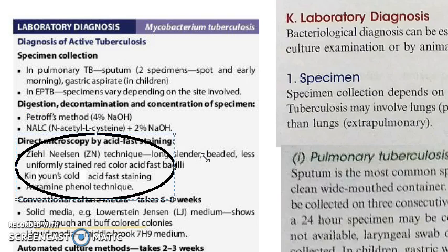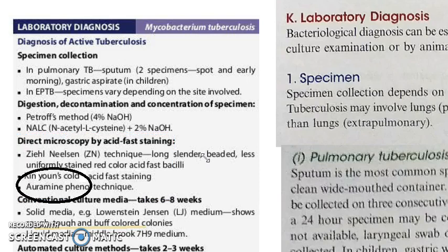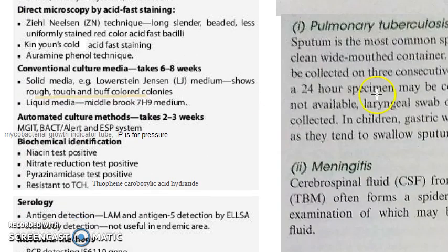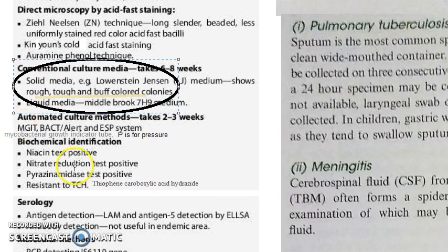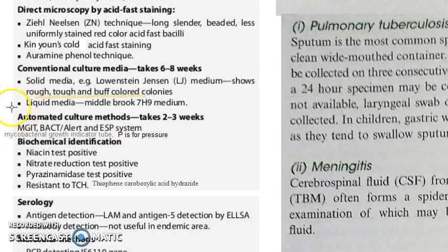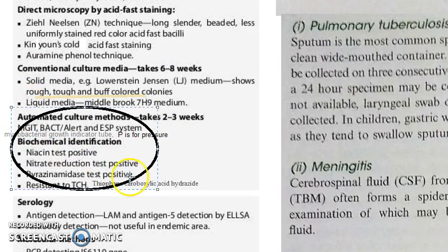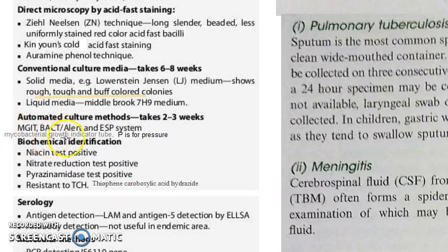Then you have direct microscopy using the Ziehl-Neelsen technique — in this you have to draw the diagram. Other staining methods are Kinyon's cold acid-fast staining and auramine phenol. Then you have conventional culture on solid media — that is Loewenstein-Jensen media — and also liquid media. For automated culture methods, remember MGIT — mycobacterial growth indicator tube — BACT alert, and ESP system.